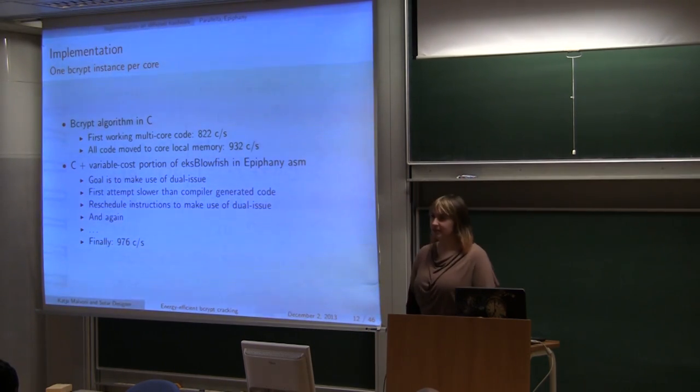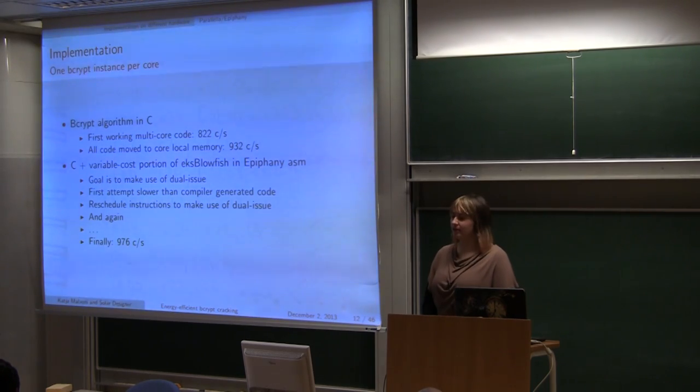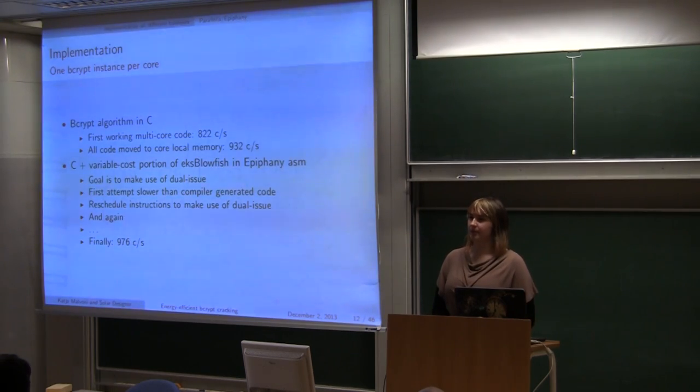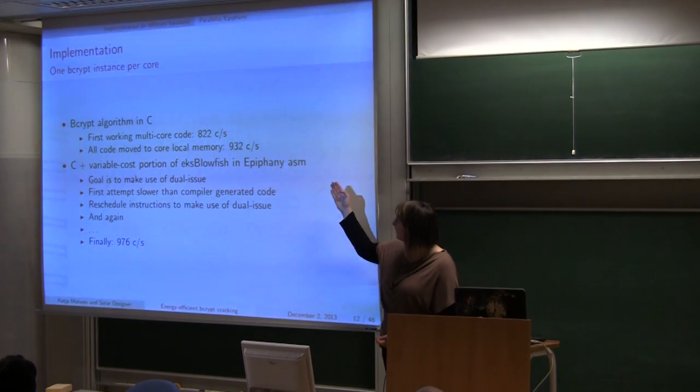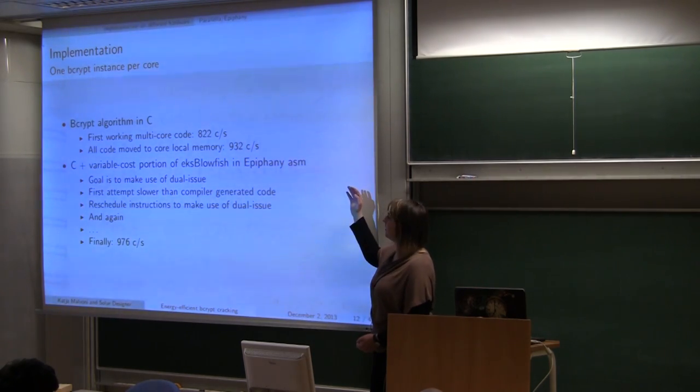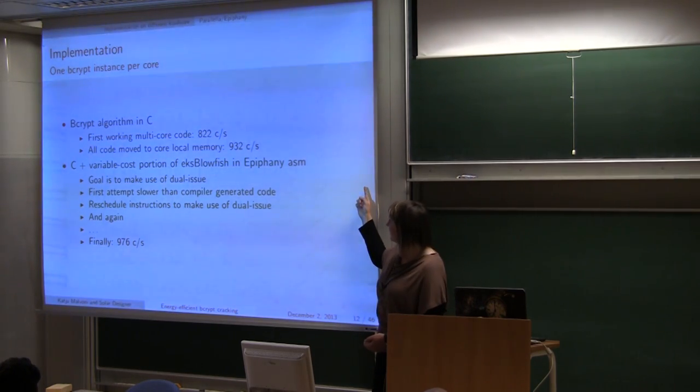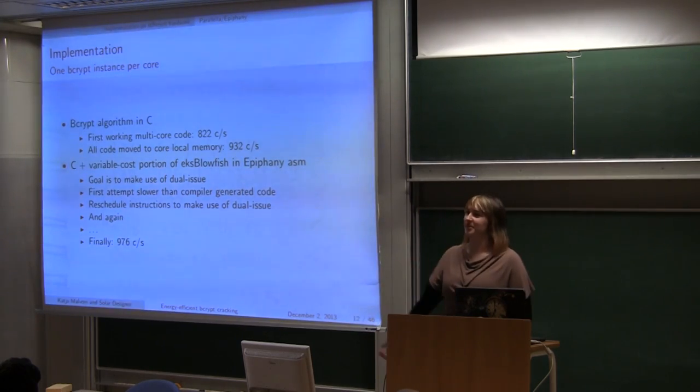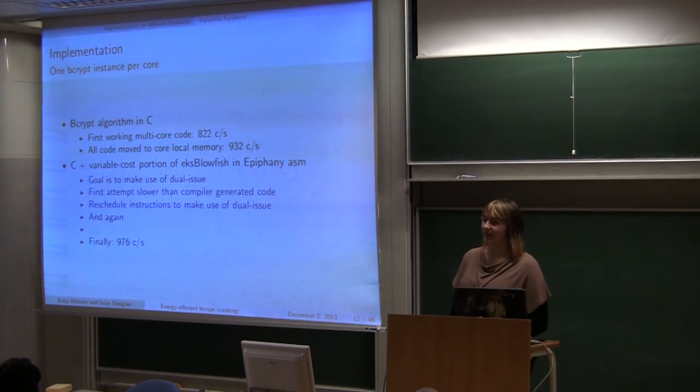So the next optimization was to move all core code to, all codes to core local memory. So that there aren't stalls when trying to fetch instructions from external memory. That resulted with the speedup to get a performance of 930 cracks per second. And then that was the limitation of the architecture. Compiler wasn't able, even though we specified we want FPU in integer mode, compiler wasn't able to actually do the scheduling and produce the assembly code that actually uses both FPU and integer ALU. So the next step was to write assembly and to use dual issue. What you see behind is actually instruction scheduling. Yes, it's written on paper. Because first attempt was slower than compiler generated code.